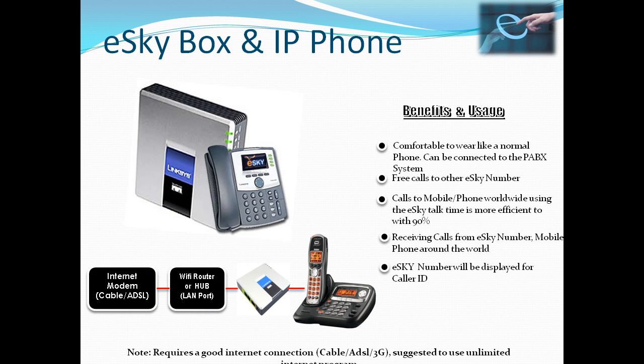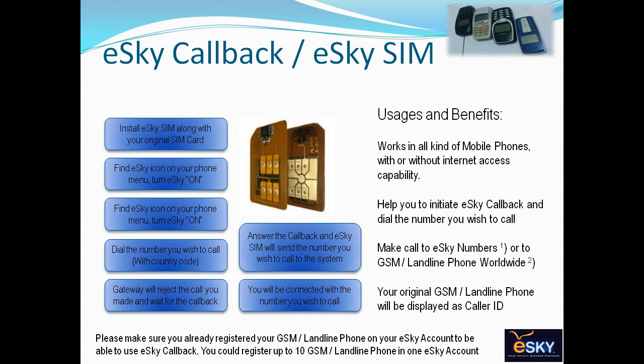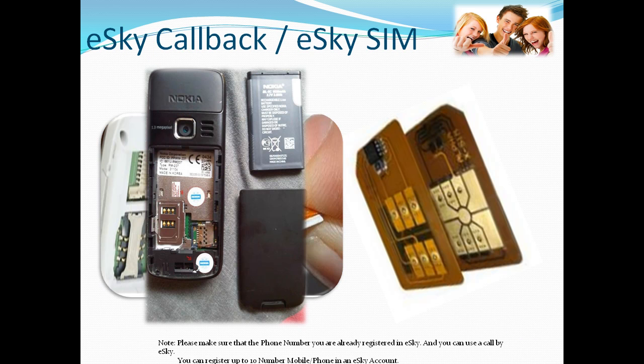eSky Box and IP Phone: you can purchase eSky box or IP phone to make calls directly from your home phone or office keyphone system, and enjoy free branch-to-branch calls worldwide. eSky also has a callback SIM card to let you make eSky calls using a low-end mobile phone, without charging your existing mobile operator bill — all usage uses eSky airtime. Just add the eSky SIM alongside your existing telco SIM card.